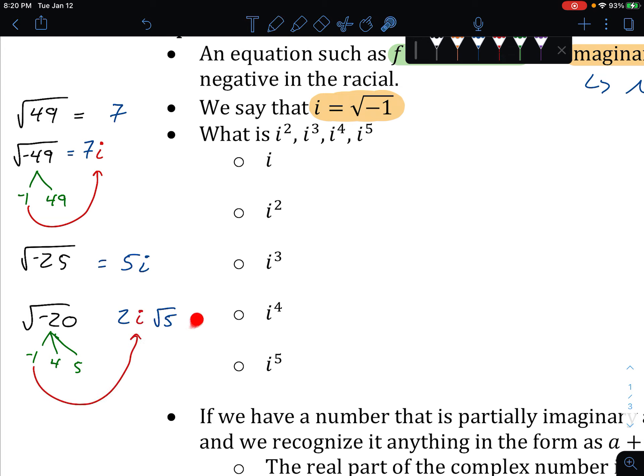And normally we write this i outside like here. We don't really write it after the radical 5, because it looks a little bit like, is it under the radical, is it not? This just looks a little bit neater. And if the i is coming out of the radical, we kind of want to write it in front of it. So that's a little bit about simplifying with i.